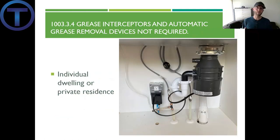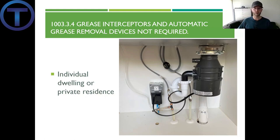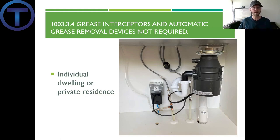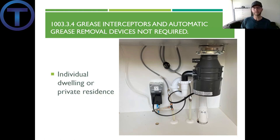Section 1003.3.4 states that grease interceptors and automatic grease removal devices are not required in individual dwellings or private residences — this is why you don't have a grease interceptor in your own house. That doesn't mean grease waste isn't going down the drain; in fact it does, and the less grease you put down the better. But on an individual dwelling, there's not as much grease as you'd find coming from a commercial kitchen, so they don't require the same separation.